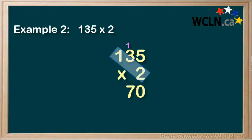Next, 2 times 1 equals 2. And so we put the 2 down here. So our final answer here is 270.